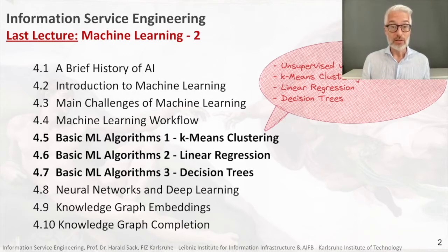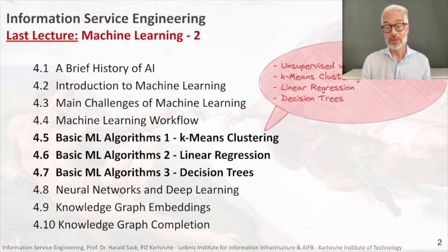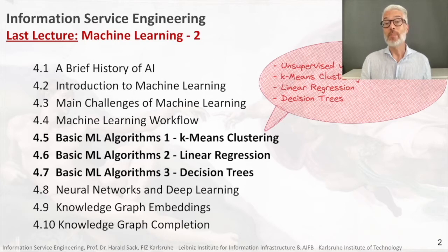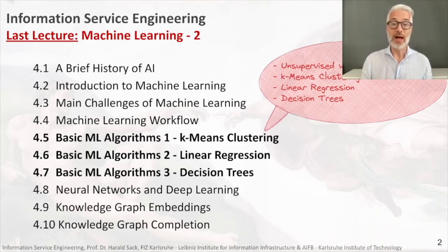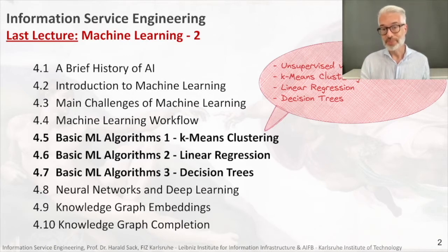In the last lecture you learned about a few supervised and unsupervised machine learning algorithms — so-called traditional machine learning algorithms. We started out with an unsupervised one: k-means clustering. K-means clustering is one of the basic unsupervised methods where you don't have labeled data and you want to see the structure of your data, distinguishing a specific number of clusters. K-means clustering is an approximation which tries to minimize the so-called within-cluster variation to create these clusters.